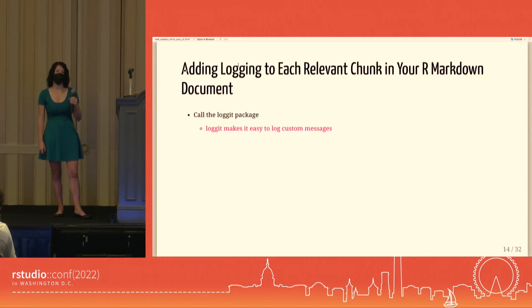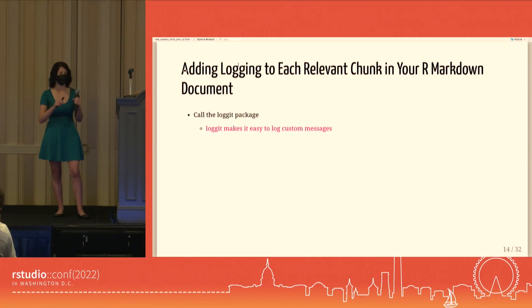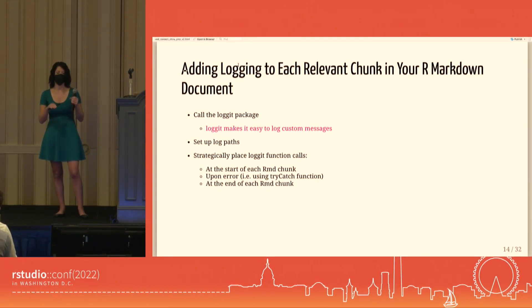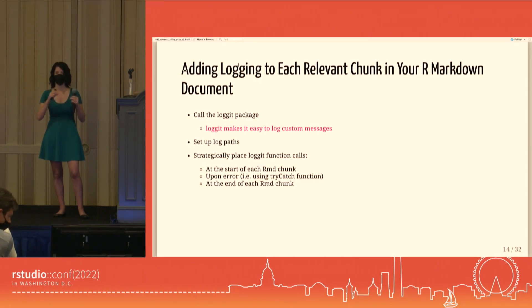We started by calling the Logit package, which made it easy to create custom error messages and add custom fields to log messages. We set up our log path to specify where log files would be written. Then we strategically placed Logit function calls throughout our script — at the start of each R Markdown chunk upon error using try-catch, and at the end of each chunk. It was really important to name each chunk with a unique name, because we pass that information back to the log.